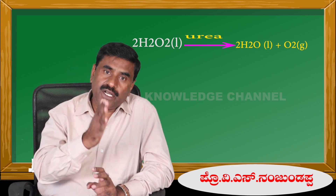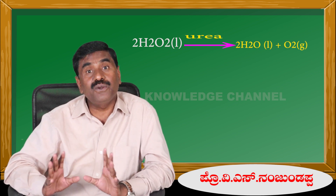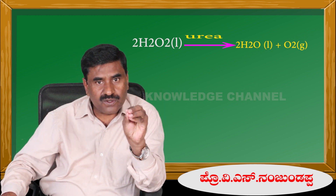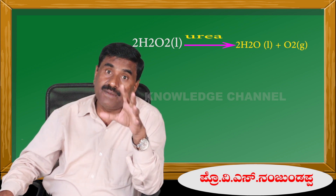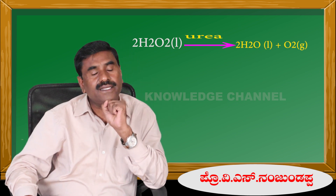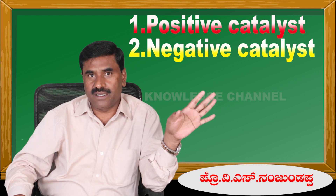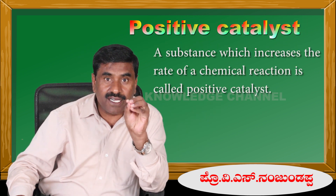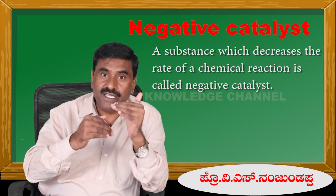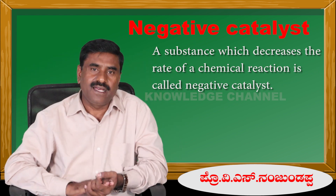In order to reduce the speed of decomposition of hydrogen peroxide, we use acetone. A substance which increases the rate of a chemical reaction is called a positive catalyst. A substance which decreases the rate of a chemical reaction is called a negative catalyst. The entire phenomena or process is called catalysis.